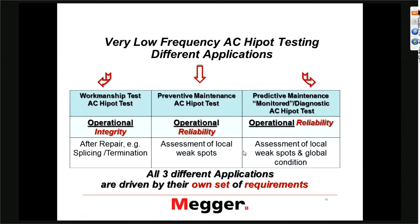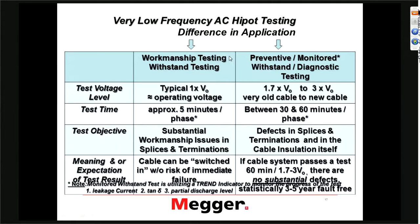All three different applications are driven by their own sets of requirements — test time and test voltage. The workmanship test: many companies use basically operating voltage for maybe five minutes. The test objective is finding substantial workmanship issues in splices and terminations, meaning: we can be switched in without risk of immediate failure. The preventive or monitored withstand test uses a minimum voltage of 1.7 U-naught — that comes from the fact that in a three-phase system, if one phase goes to fault you might have system voltage between the other two phases. The test time is between 30 and 60 minutes per phase.